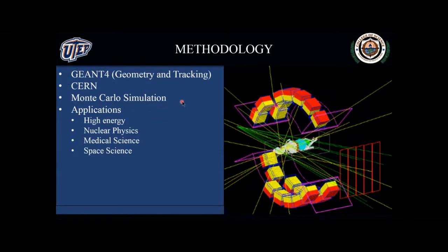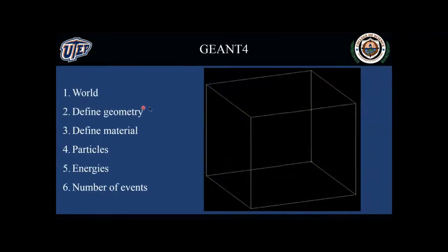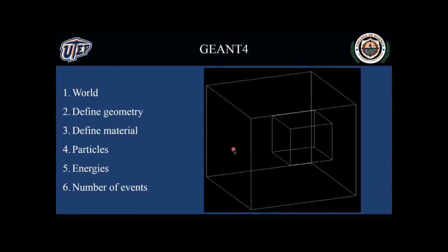We are going to be using Geant4, which as you know is the standard for simulation — it's basically a Monte Carlo simulation used in many areas of physics. You start by defining a space in which everything is going to happen — that would be your world. Then you define the target; in this case, the body parts are going to be here, filled with tissue. The rest of this space is going to be the detector. Any gamma ray that comes out from the target and enters this second space is going to be detected and counted.